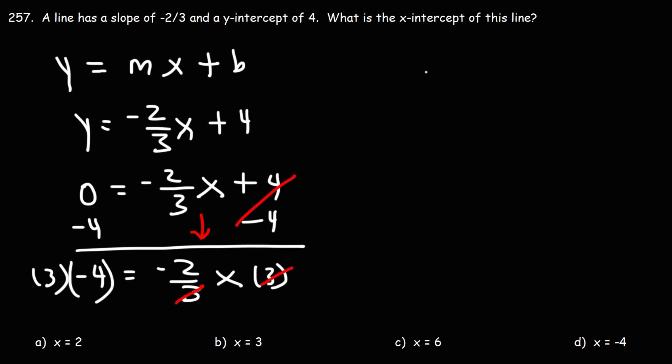So on the left we have 3 times negative 4, which is negative 12, that equals negative 2x. Next we could divide both sides by negative 2, and negative 12 divided by negative 2 is positive 6, and so that's going to be the x-intercept of this line.